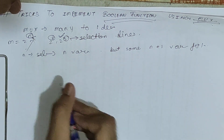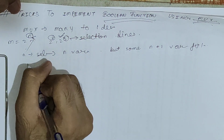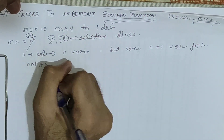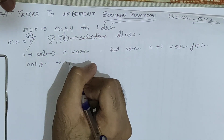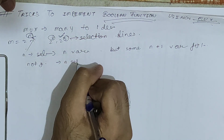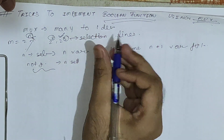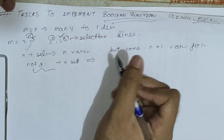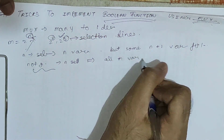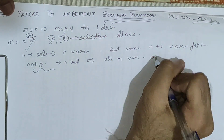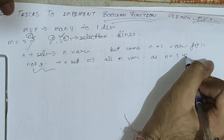With the availability of a NOT gate as well — if you have n selection lines and a NOT gate — then we can implement all n-variable functions as well as all (n+1)-variable functions.